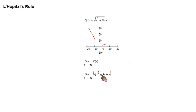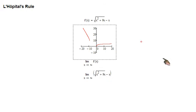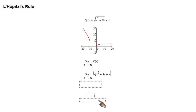Limit as x goes to infinity, square root of x squared plus 9x minus x. If we were to start right off the bat just plugging infinity in for x, we'd get what's known as an indeterminate form.